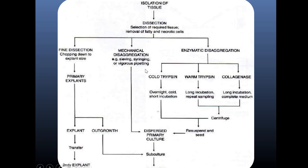In the diagrammatic representation of cell culture: you isolate the tissue, perform disaggregation by dissection, mechanical disaggregation using sieving, syringing, or pipetting, or enzymatic disaggregation using trypsin or collagenase. After that, you get the explant and put the tissue through primary, secondary, and tertiary subculturing, which results in the formation of a cell line. With additional treatment, it can become a continuous cell line.